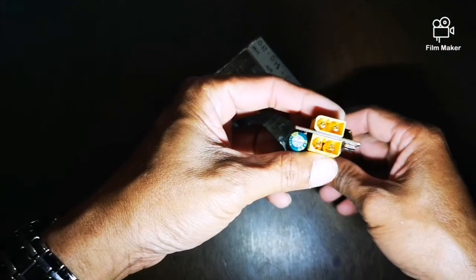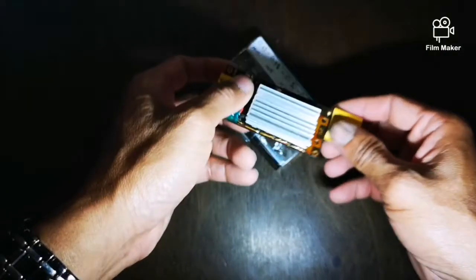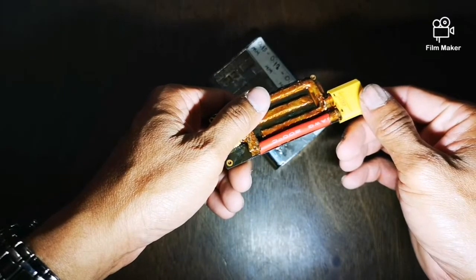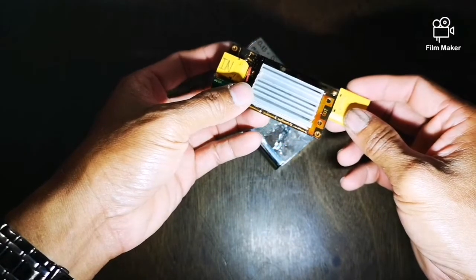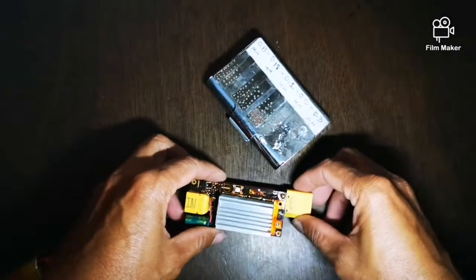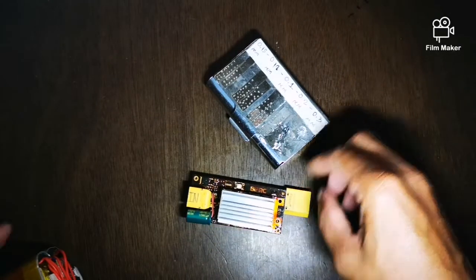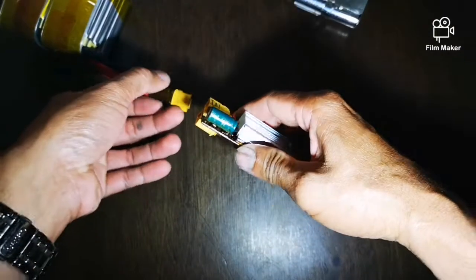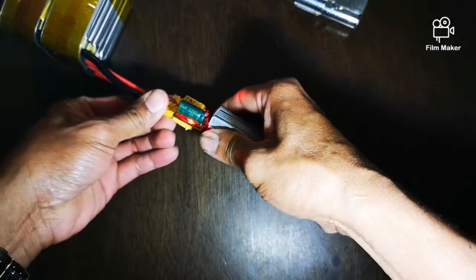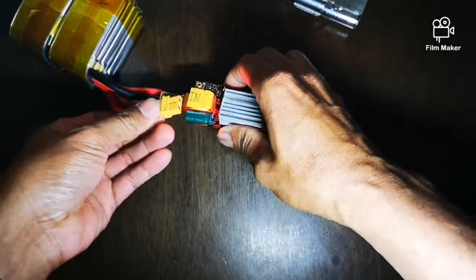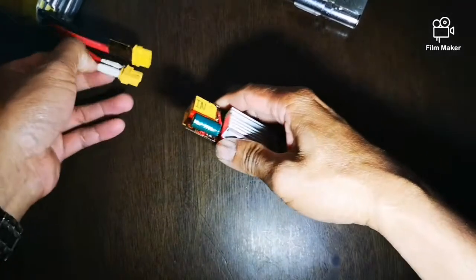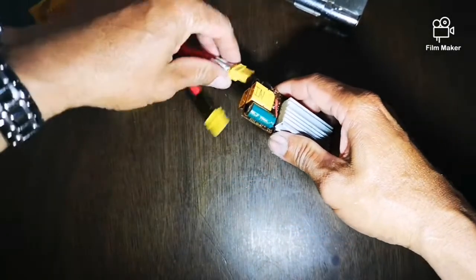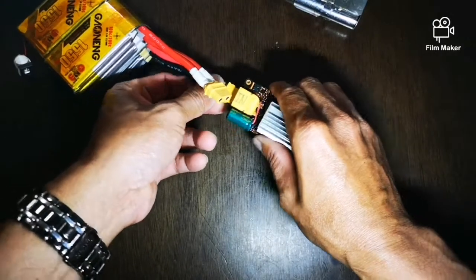I installed two XT60 connectors so it can handle high current. I have a 4S3P battery pack, with each pack rated at 1.5Ah, for a total of 6Ah.